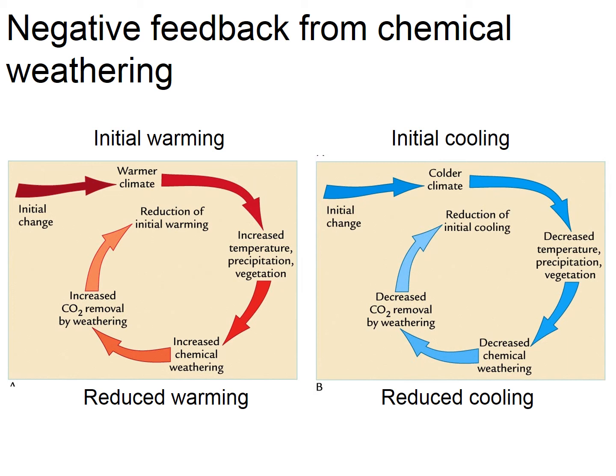This is called a negative feedback. Likewise, if you cool the planet, it will be colder and drier, we'd have less weathering, less CO2 would be removed, more would be left in the atmosphere, and that would allow a little bit of warming to counteract the initial cooling. This is opposite to the effect of ice sheets. With an ice sheet, it gets colder, you have more ice, you have more albedo, the planet reflects more energy out into space, and that increases the cooling. That's a positive feedback — whether it warms or cools doesn't matter; it's about whether it moderates or amplifies the initial change.